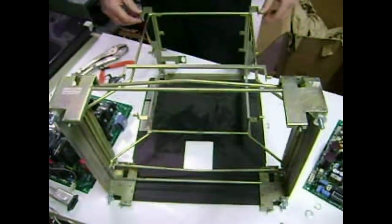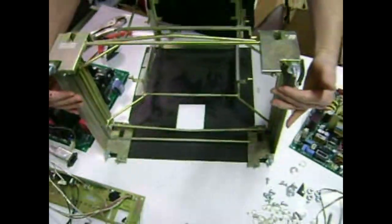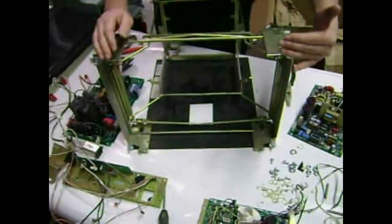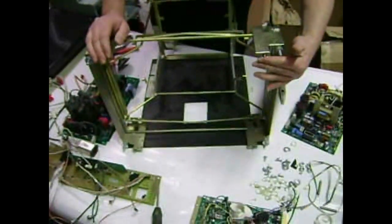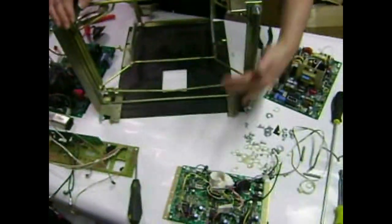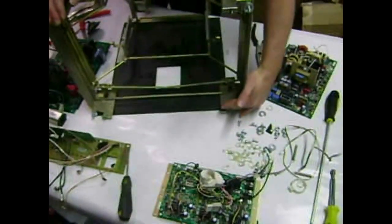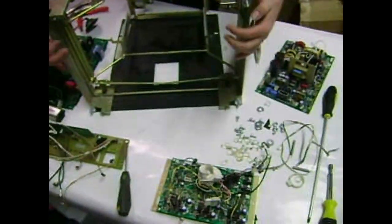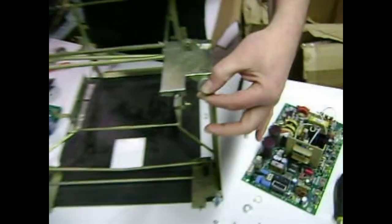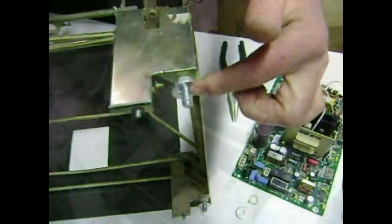Our next part: we're going to install the LCD to the front of this. The key with the LCD is you want it to be the same distance as the CRT was. The CRT was basically flat with this, so we're going to mount the LCD so it sits flush with this edge.